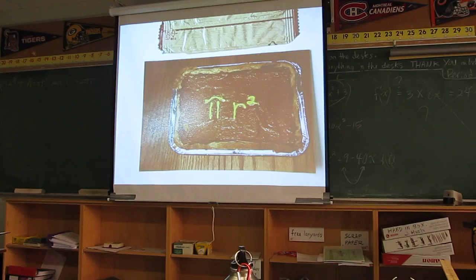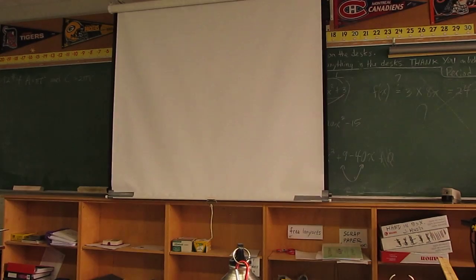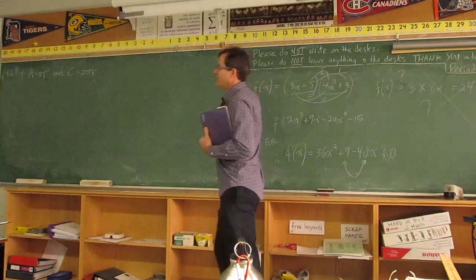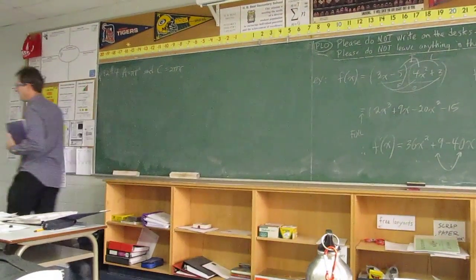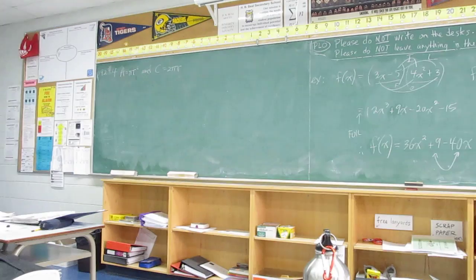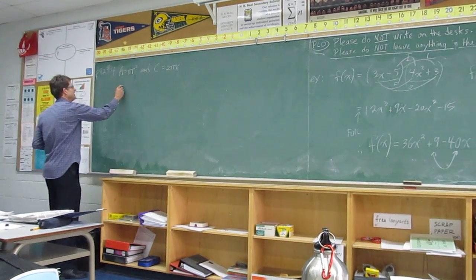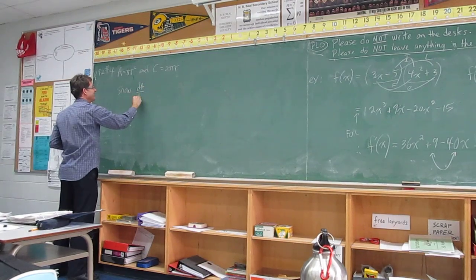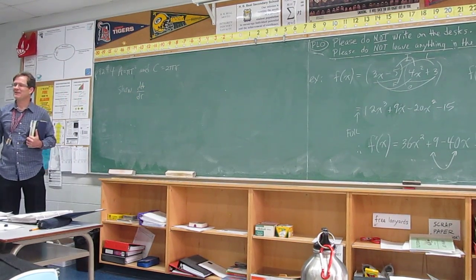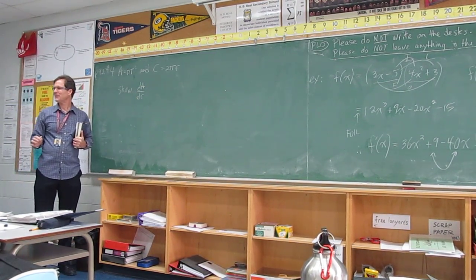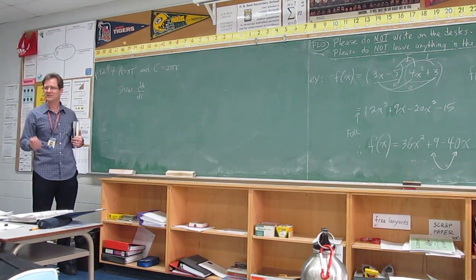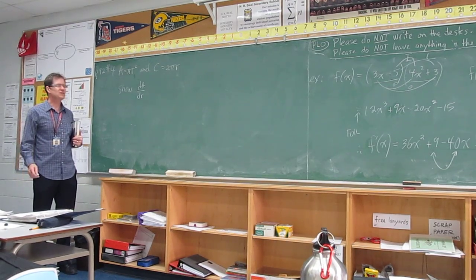Okay Shane read the second part. Show that dA over dr equals C. Now Shane, you're not supposed to say dA over dr. What are you supposed to say? In this case don't say blah blah blah. dA dr or dA by dr, because it's not a fraction. So don't say over. It's very tempting. Don't say that.